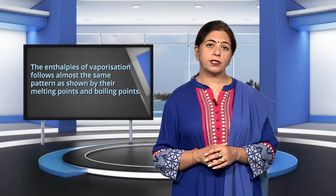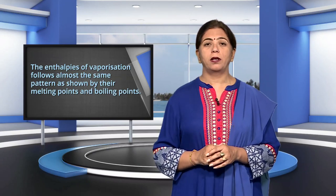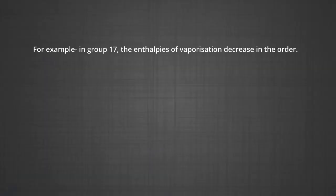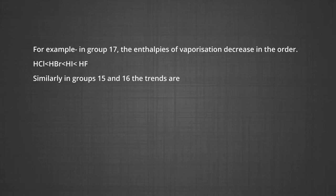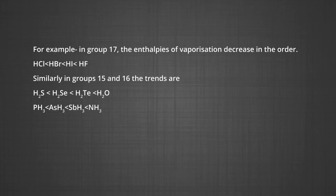The enthalpies of vaporization follow almost the same pattern as shown by melting and boiling points. For example, in group 17 the enthalpies of vaporization decrease in the order: HF > HI > HBr > HCl. Similarly, in group 16 the trend is H₂O > H₂Te > H₂Se > H₂S, and in group 15: NH₃ > SbH₃ > AsH₃ > PH₃.